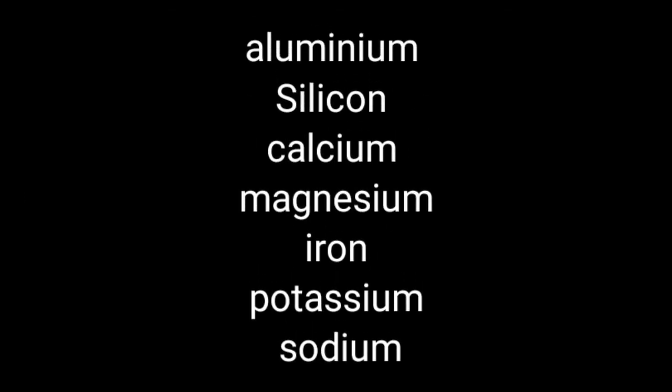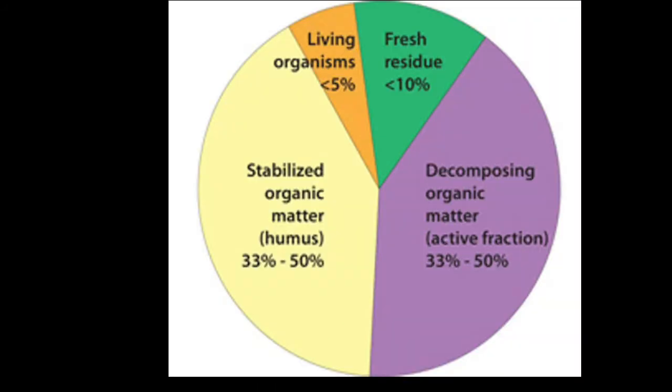Just like aluminum, silicon, calcium, magnesium, iron, potassium, and sodium. These are the main components. Along with these, boron, magnesium, copper, zinc, molybdenum, cobalt, and fluorine — these very less quantitative minerals are also present in the soil. These come from the parental rock.